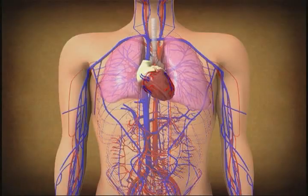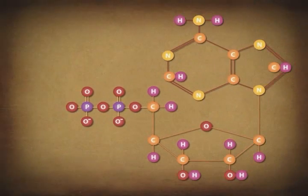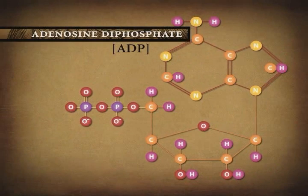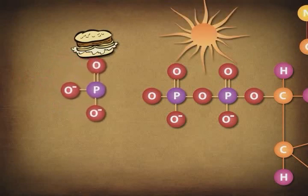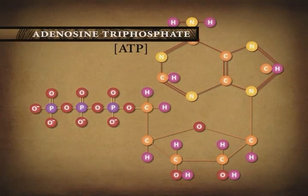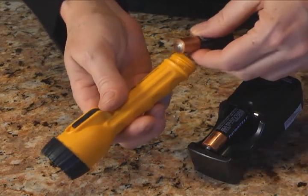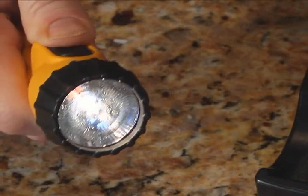This energy can then be used to contract muscles, pump blood, breathe, or whatever active work the body needs to do. The resulting molecule is adenosine diphosphate, or ADP. When energy is not immediately needed by our bodies, the reverse reaction takes place. Using energy obtained from food or sunlight, a chemical catalyst causes the third phosphate group to be attached to the ADP molecule, resulting in an ATP molecule. So the ATP molecule acts as a chemical battery, storing energy when it isn't needed, but able to release it instantly when it is.